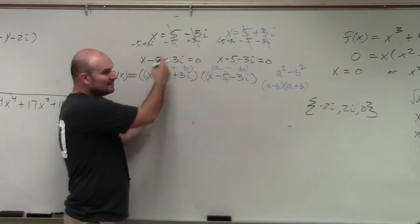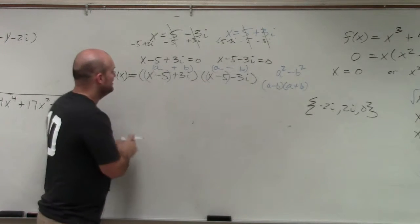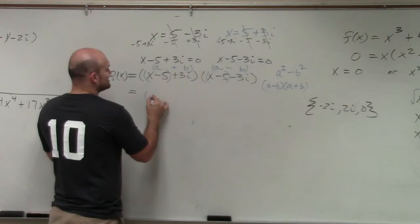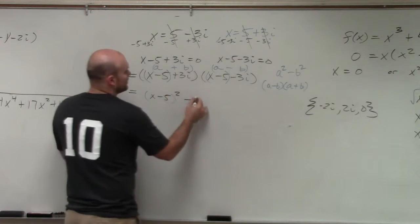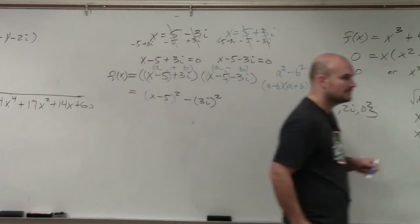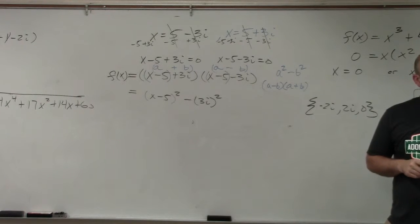So rather than doing distributive property, which you could do, this makes it much easier. So therefore, I obtain x minus 5 squared minus 3i squared. Follow me? Negative 9.